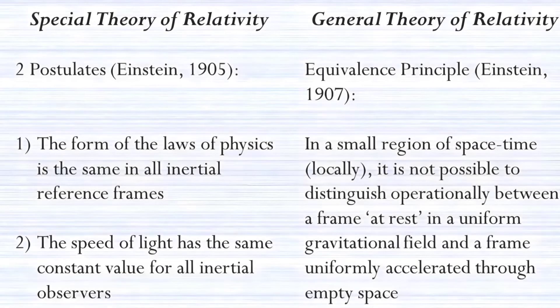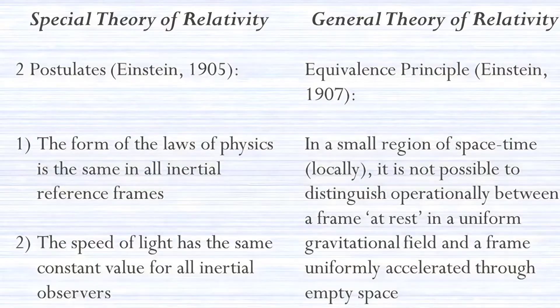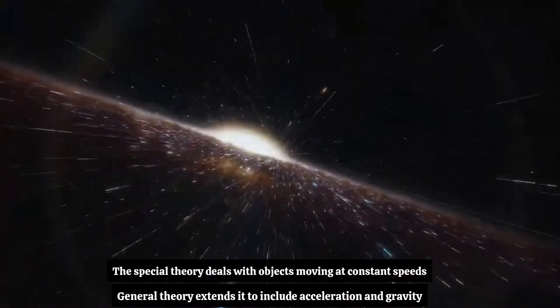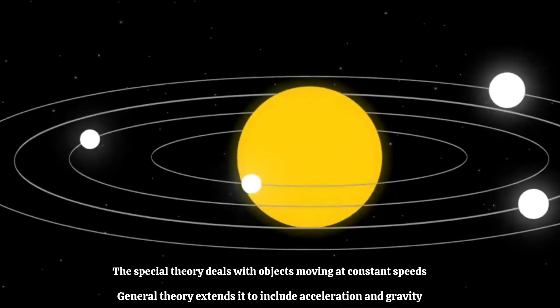Einstein's theory consists of two parts: the Special Theory of Relativity and the General Theory of Relativity. The Special Theory deals with objects moving at constant speeds, while the General Theory extends it to include acceleration and gravity.